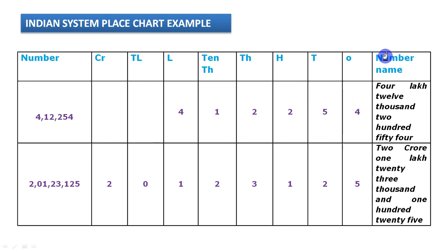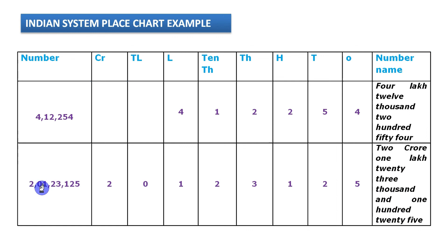For the eight-digit number: first comma after three digits, second after two, third after two — total three commas. Three commas means start from crores. Reading together: two crores, one lakh, twenty-three thousand, one hundred twenty-five.